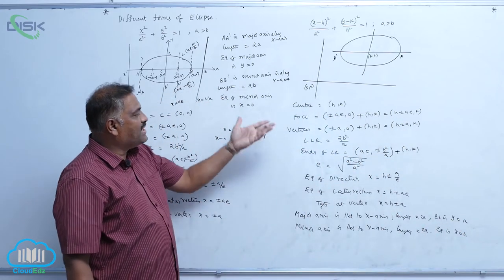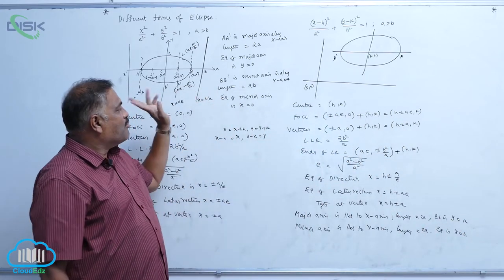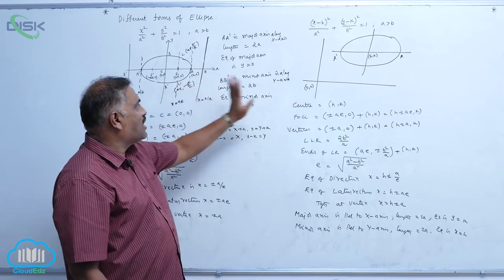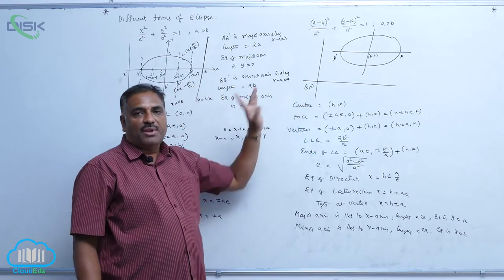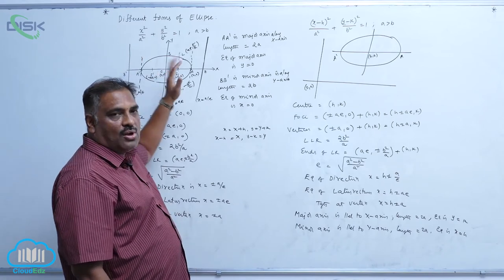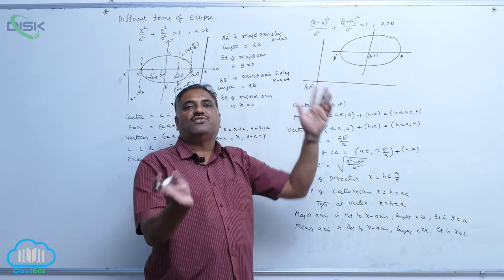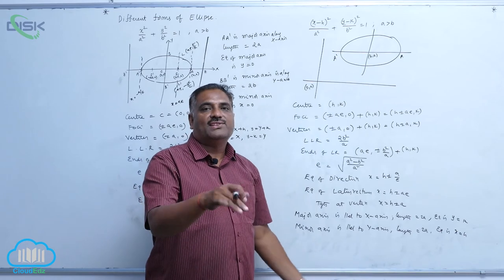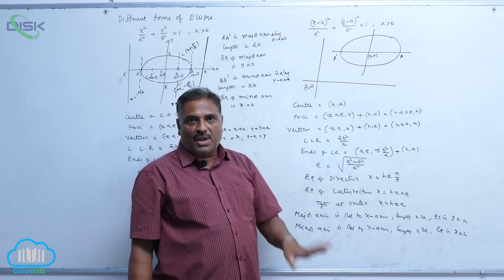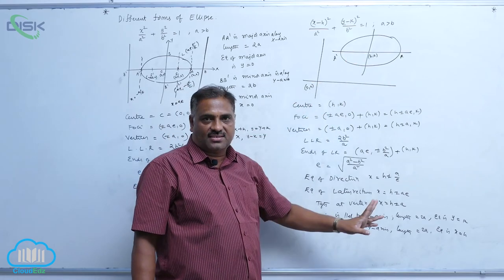We have now discussed and compared both equations. The difference is that previously the center of the ellipse was at (0, 0), whereas now the center has been shifted to (h, k) — a shifting of origin without changing the direction of the axes.